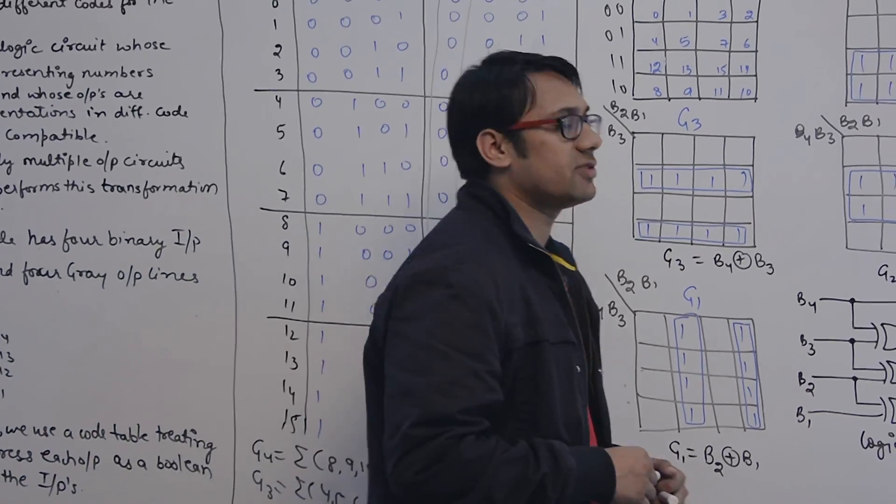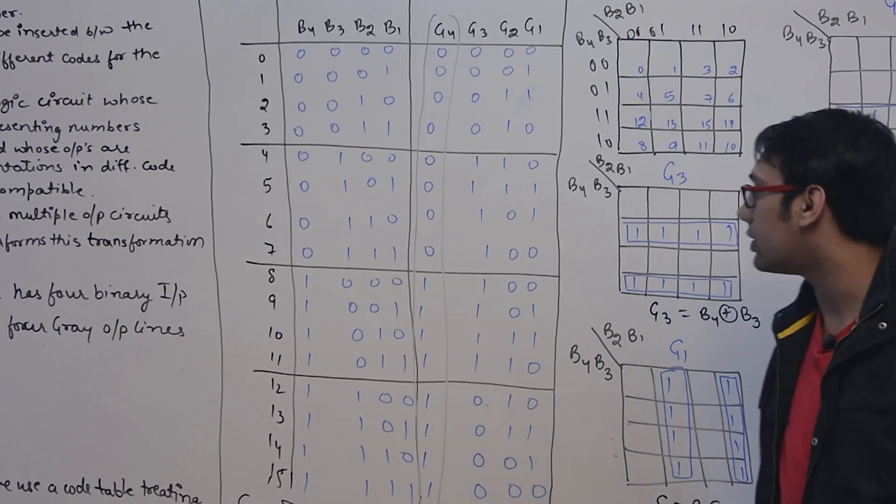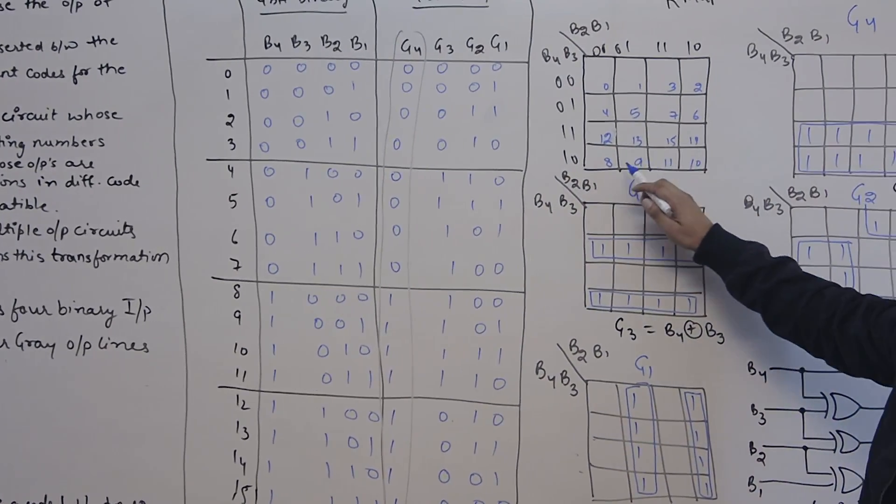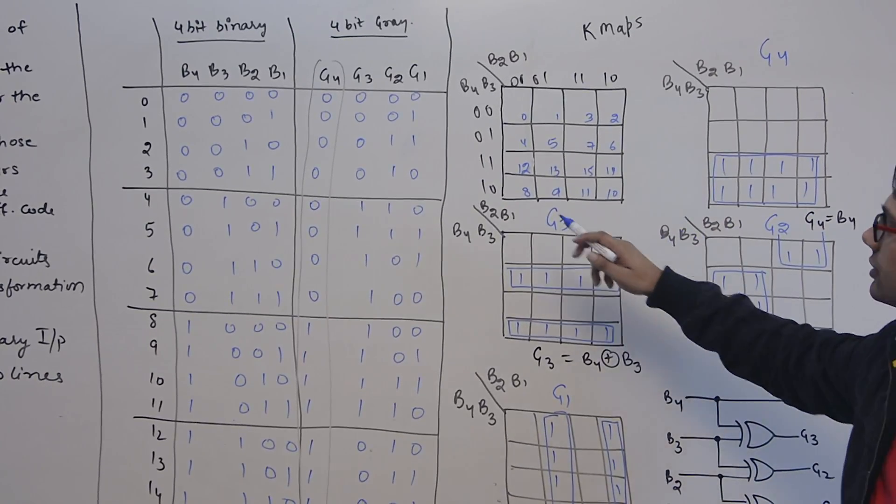For example, let us suppose if you want to implement G4, then G4 is having the truth value 1 at 8, 9, 10, 11, 12, 13, 14, 15. So G4 can be written as summation of min terms which are true at 8, 9, 10, 11, 12, 13, 14, and 15. If you take G4, G4 is true from 8 to 15, so all the bits which are representing 8, 9, 10, 11, 12, 13, 14, 15, all these will be 1.